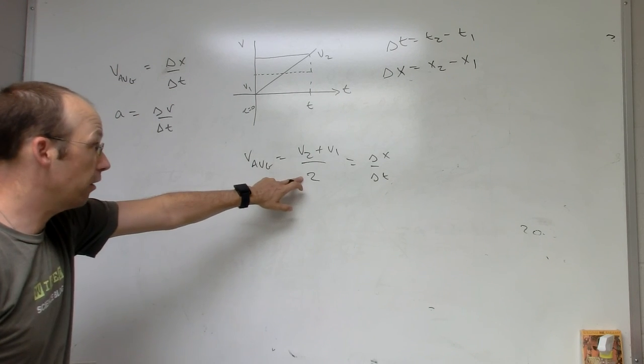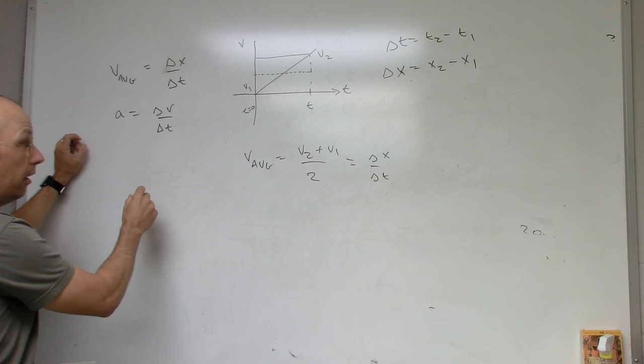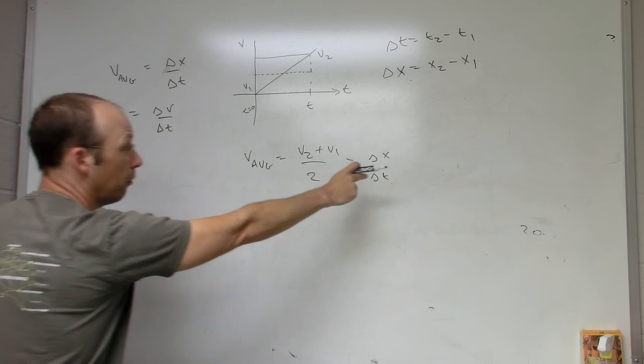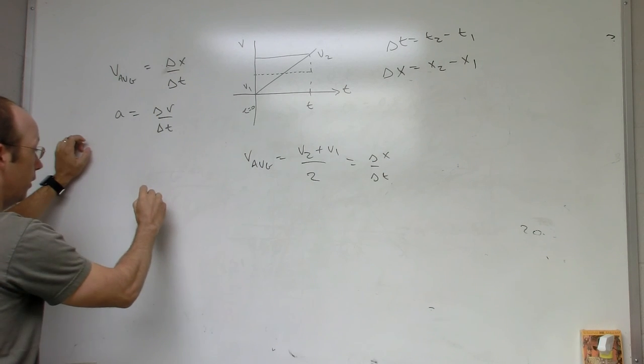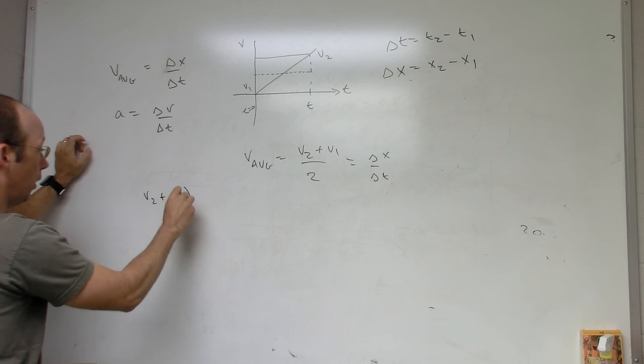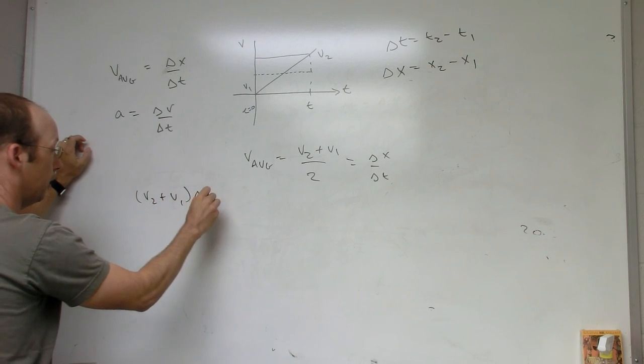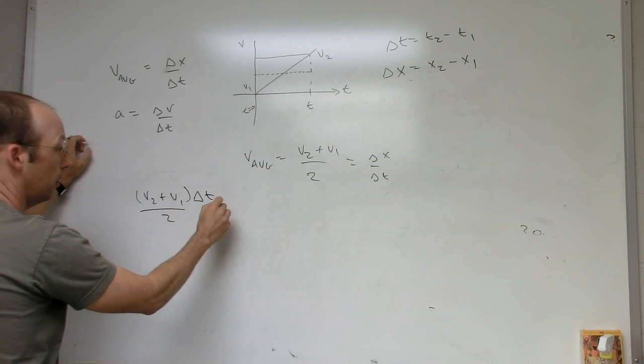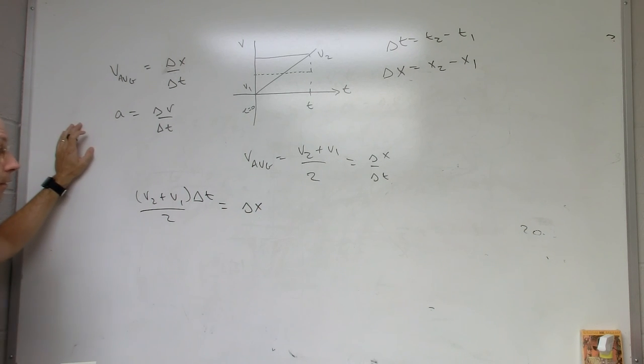So I can just rewrite this equation as I'm going to first multiply by delta t. So I get v2 plus v1 delta t over 2 equals delta x. Okay, so now I can multiply this out. Hold on, wait a second.